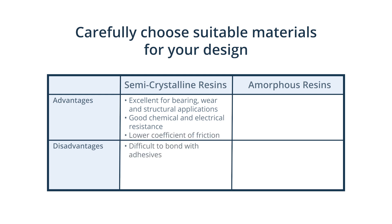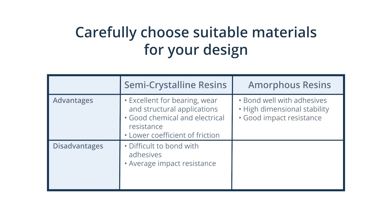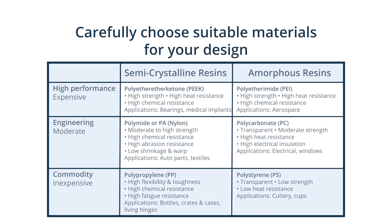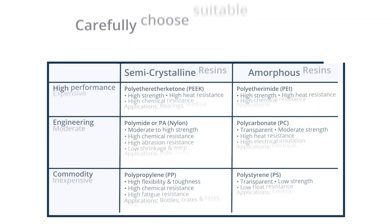However, semi-crystalline thermoplastics are difficult to bond with adhesives and their impact resistance is average. Amorphous thermoplastics bond well with adhesives, have high dimensional stability and good impact resistance. However, they have low resistance to fatigue and stress cracking. These resins can be categorized as low-cost commodity resins, medium-cost engineering resins, and high-cost high-performance or specialty resins.